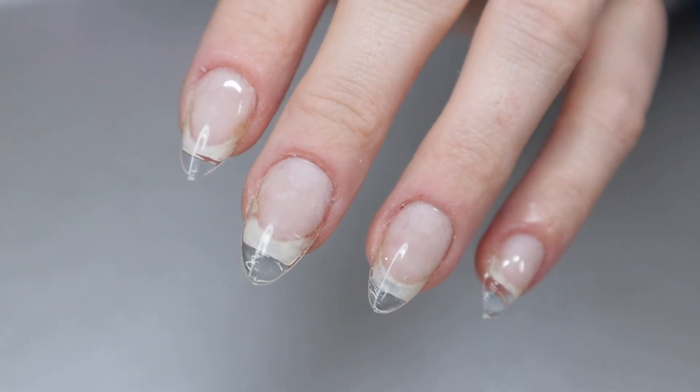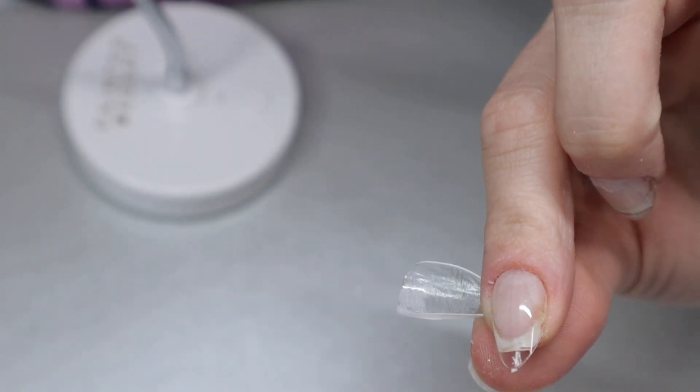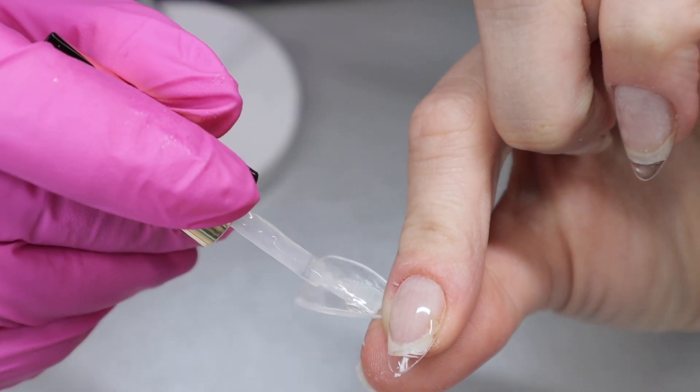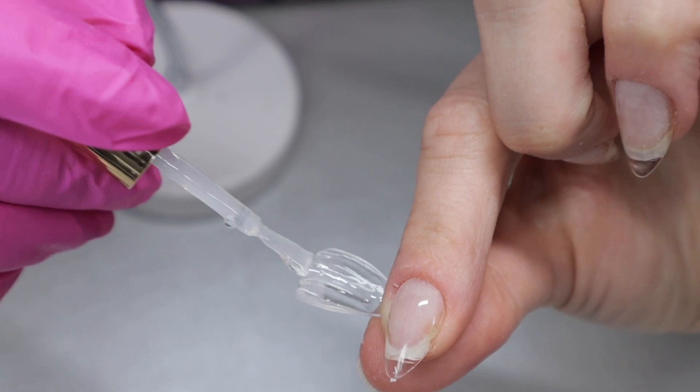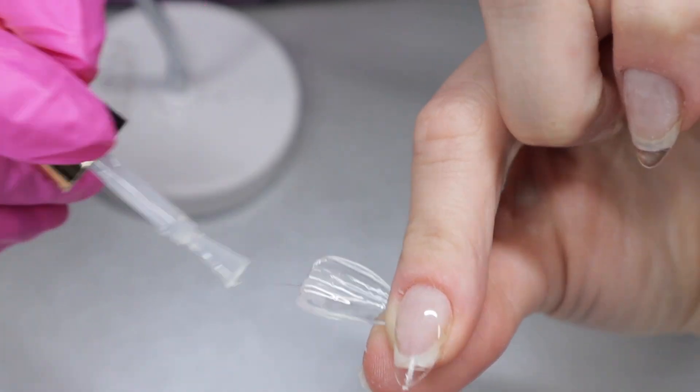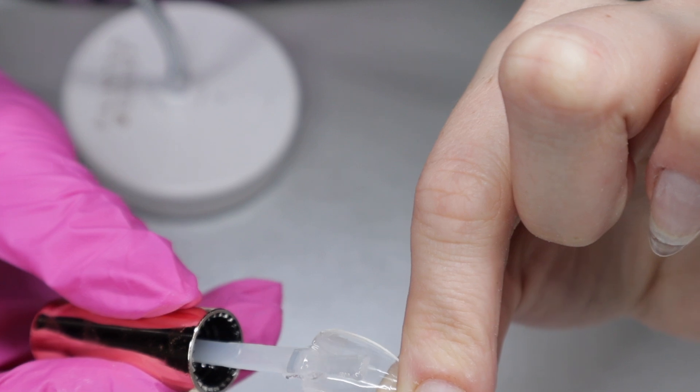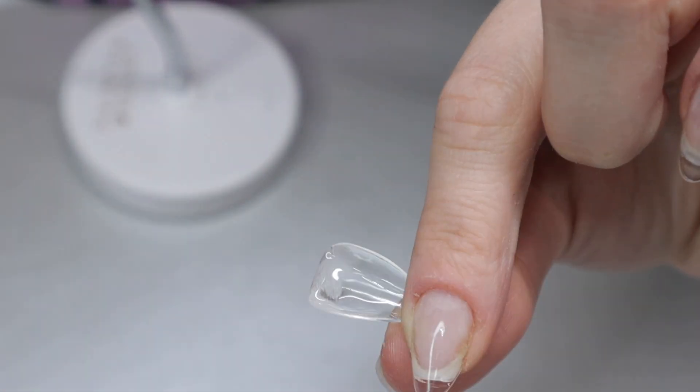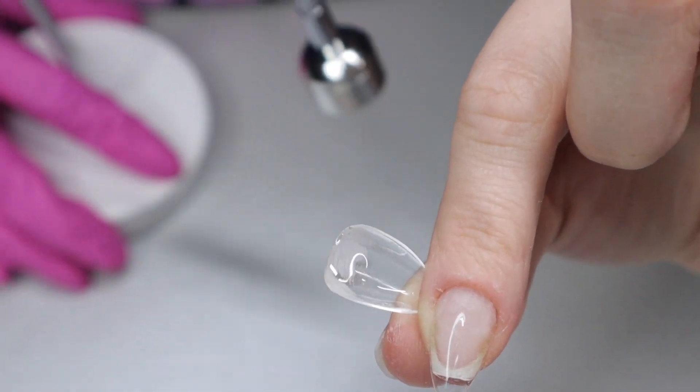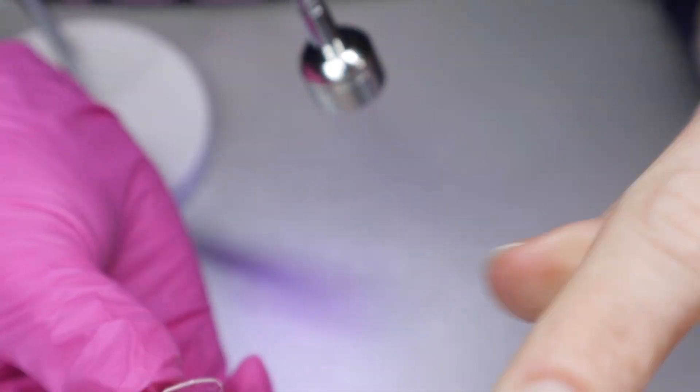The next nail I'm going to focus on is the thumb. Since I work my way from my pinky to my thumb, I apply a little bit more gel each time as I go from a smaller nail to a larger nail. Now that I'm going on my thumb, it is my largest nail, so I have to apply a larger amount of gel. It's very important that you apply the correct amount of gel, trying not to apply too much or too little. This definitely does take practice.